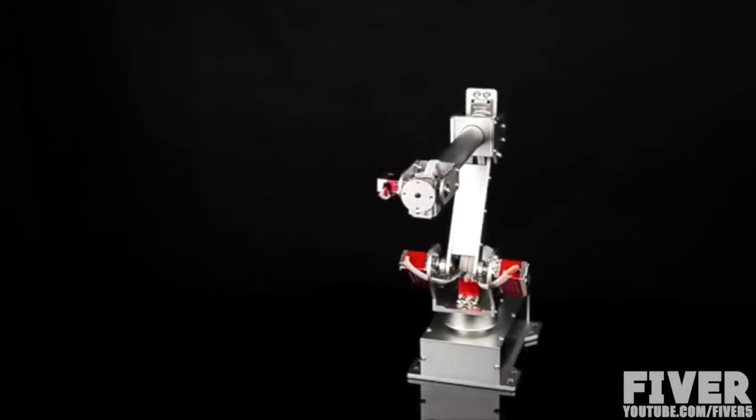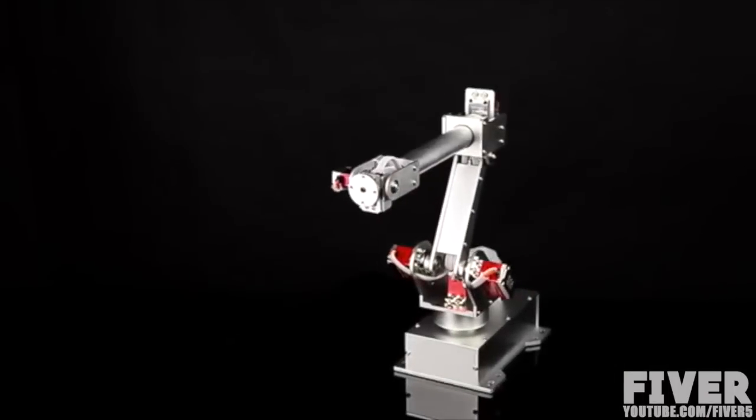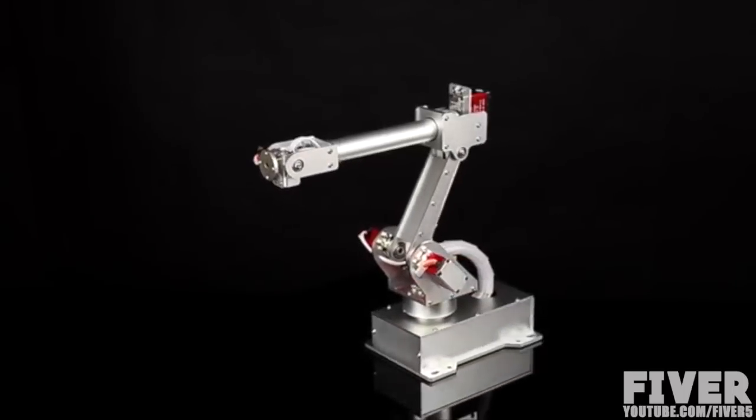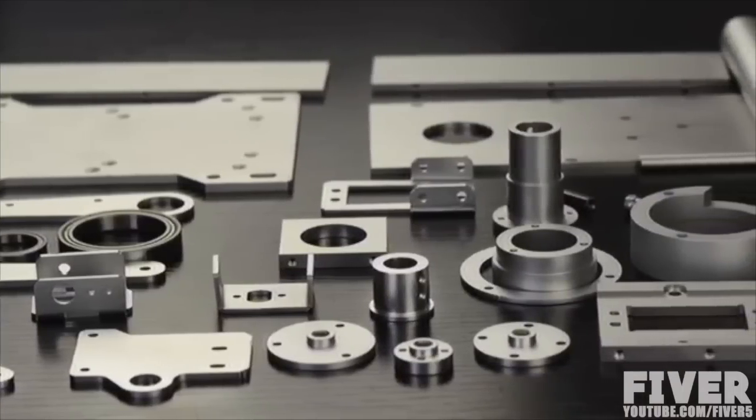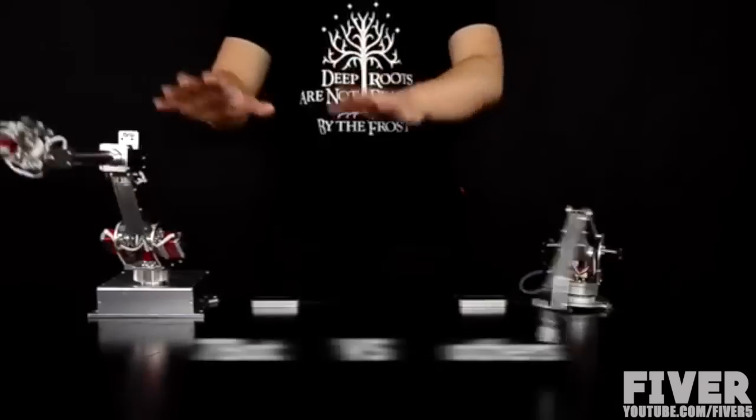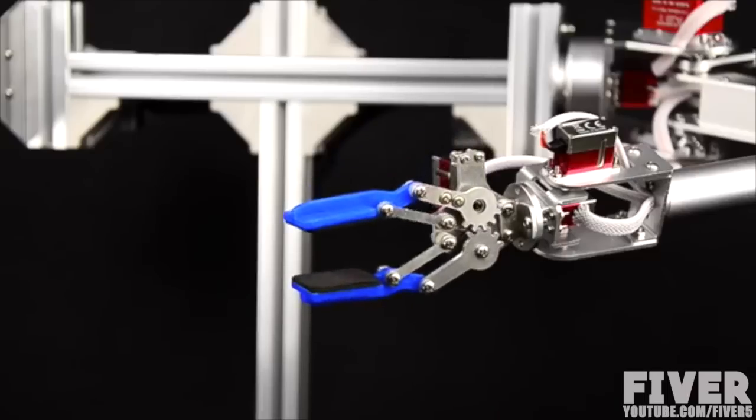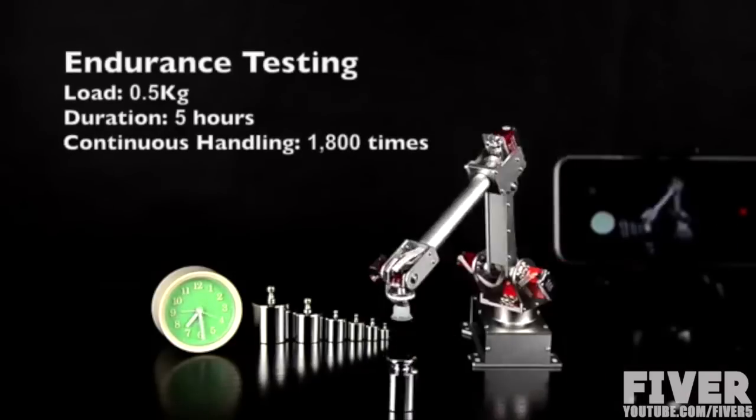7Bot Arm is our first product. It has 6 degrees of freedom modeled after the classic ABB industrial robot. The all aluminum body, 6 high torque metal digital servos, and optimized control algorithm come into this accurate, stable, agile, and durable 7Bot Arm.